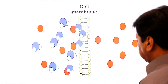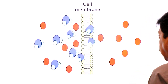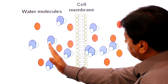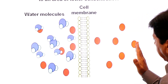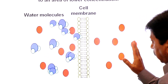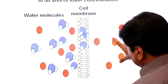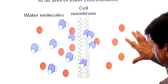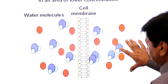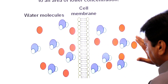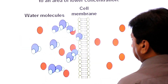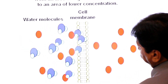Looking at the animation: you can see water molecules at higher concentration on one side of the plasma membrane and lower concentration on the other side. Water diffuses from higher concentration to lower concentration across the plasma membrane. This is osmosis.